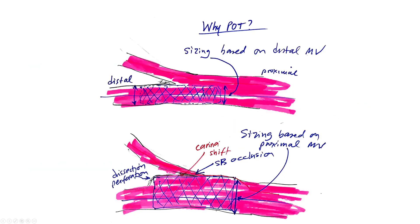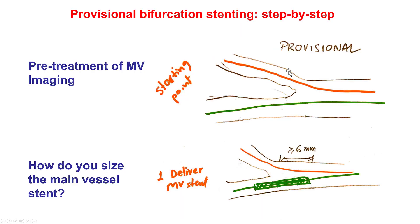If one puts a stent sized for the proximal main vessel, and this is much larger than the distal main vessel, then two bad things can happen. One is carina shift, which can result in stenosis or occlusion of the ostium of the side branch. The second is potential dissection or perforation when the stent, which is oversized for the distal main vessel, gets placed. So the diameter should match the diameter of the distal main vessel. In terms of length, the length should be enough to cover the lesion distally, but also to extend proximal to the bifurcation by at least 6 to 8 millimeters. The reason for this is that proximal optimization is needed in most bifurcation stentings, and the shortest balloons are 6 to 8 millimeters.